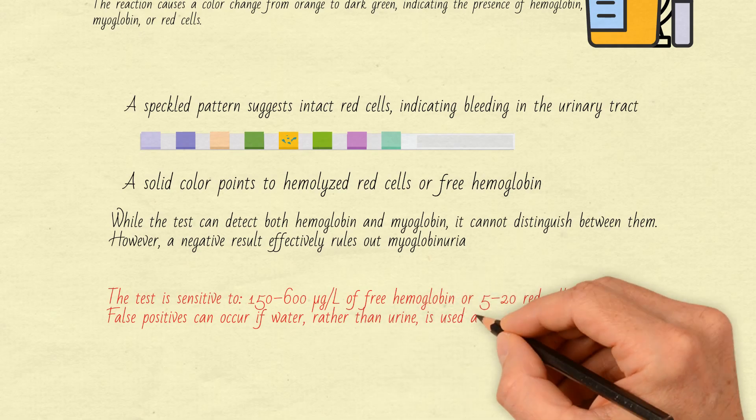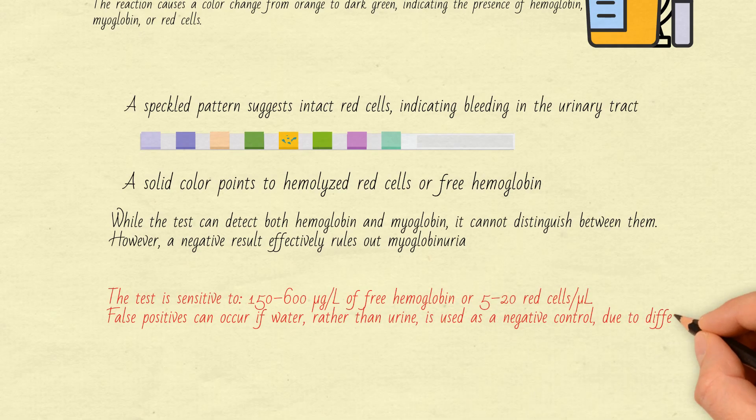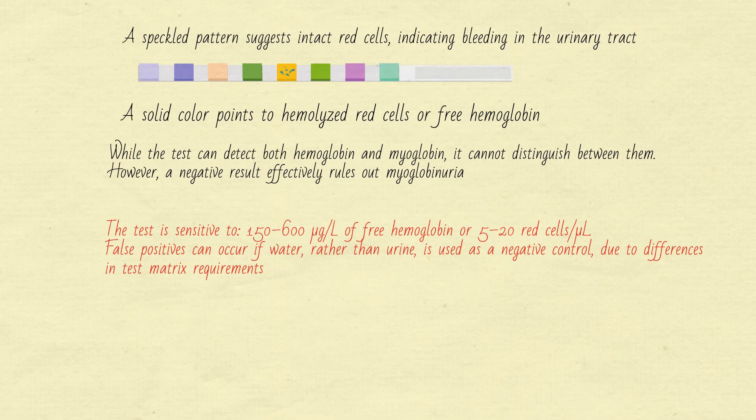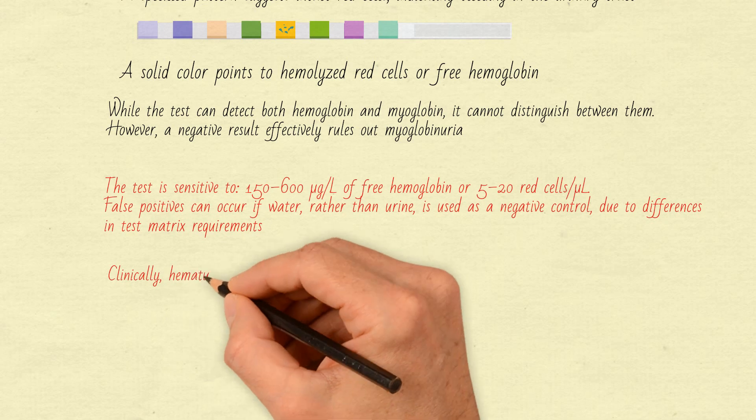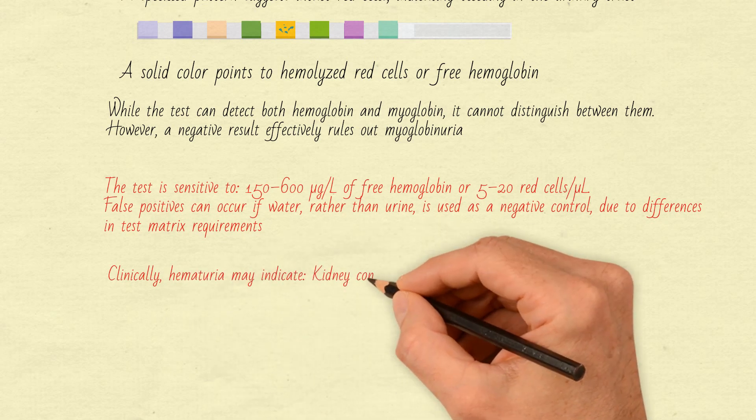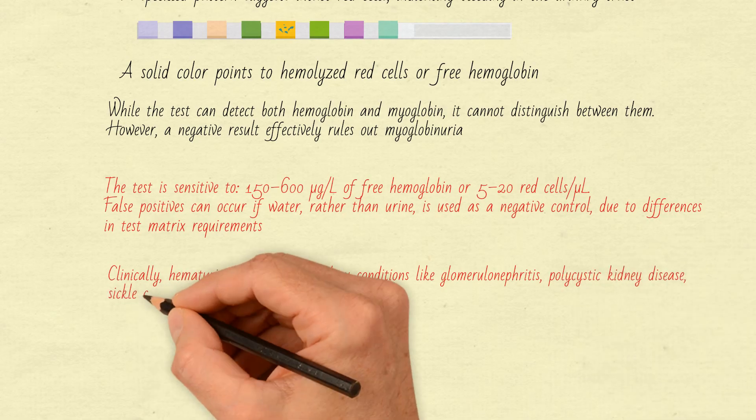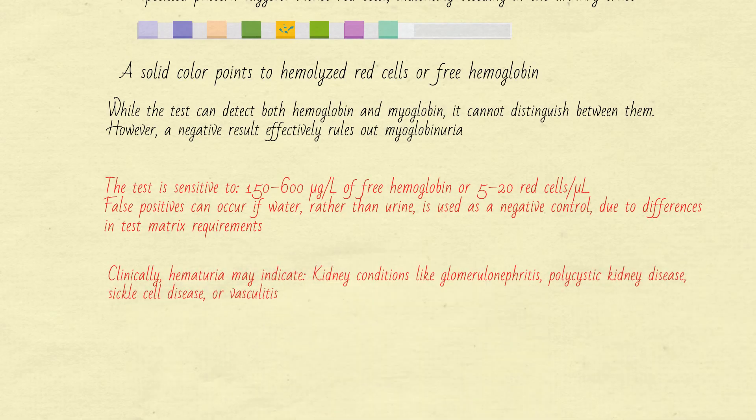False positives can occur if water, rather than urine, is used as a negative control, due to differences in test matrix requirements. Clinically, hematuria may indicate kidney conditions like glomerulonephritis, polycystic kidney disease, sickle cell disease, or vasculitis.